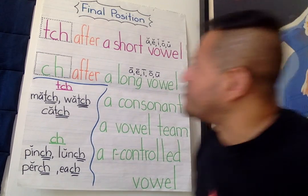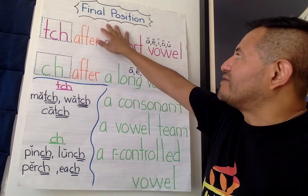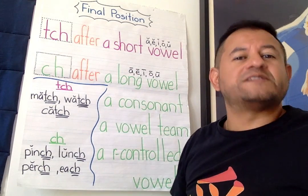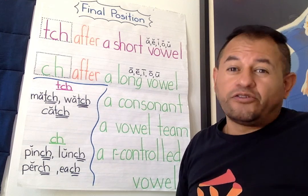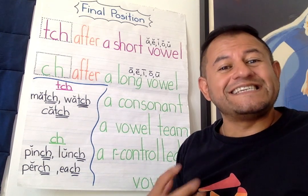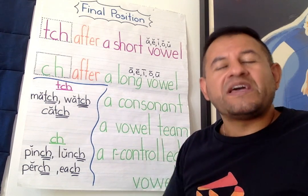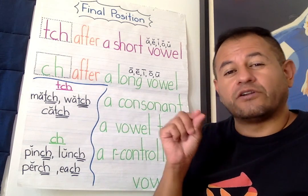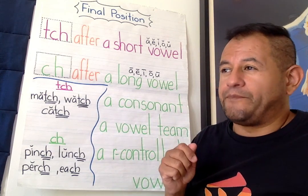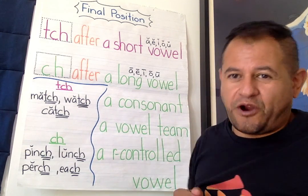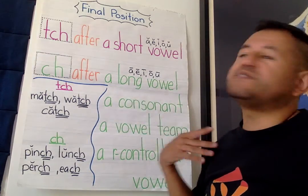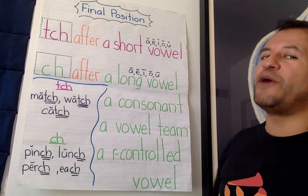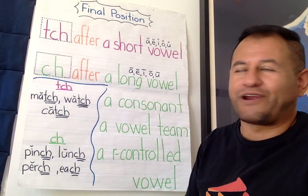So just a quick review. When we have the final sound or final position of a "ch," sometimes it's just "ch," other times it's "tch," and that T is a little bit more silent. You might hear it a little bit, but you really need to be listening for it. So there are two rules that you can remember to help you figure out when to use which one when you're writing.